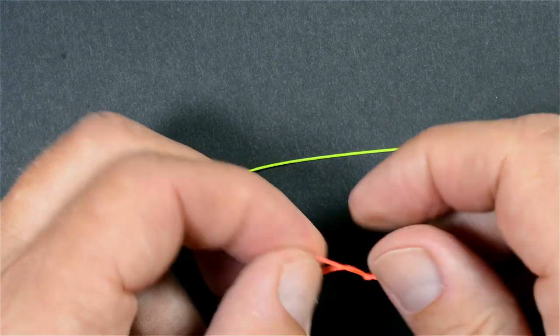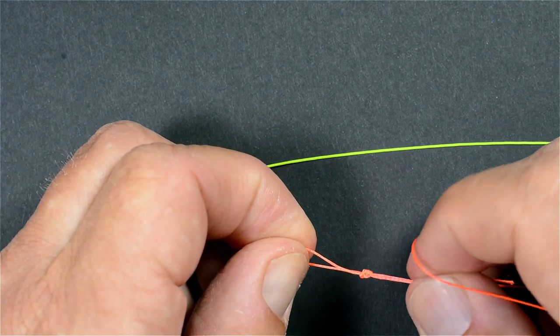If you tie it on monofilament, moisten the line before tightening.